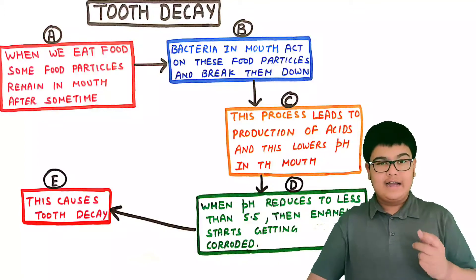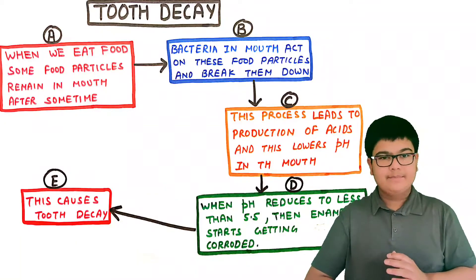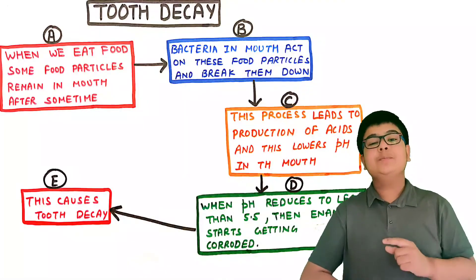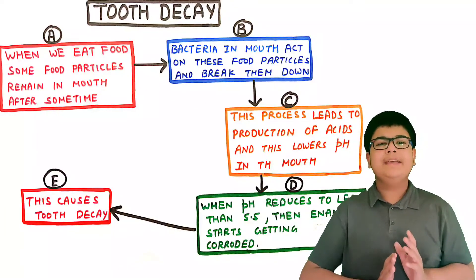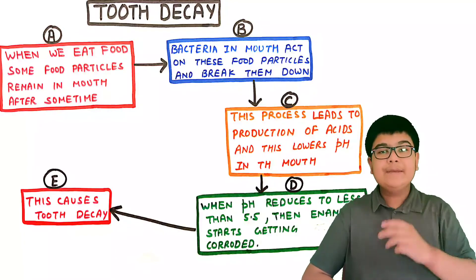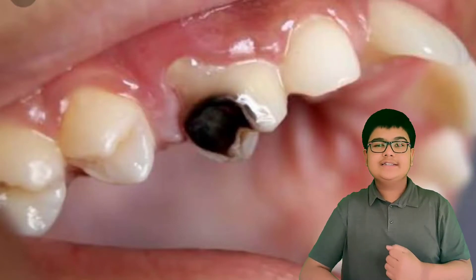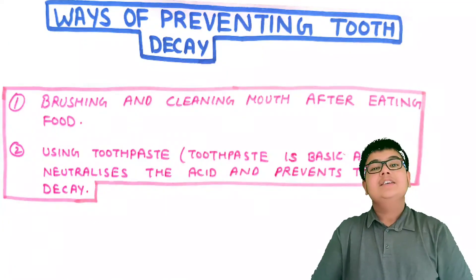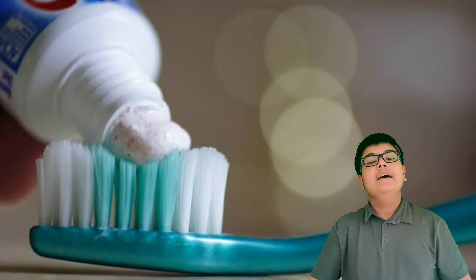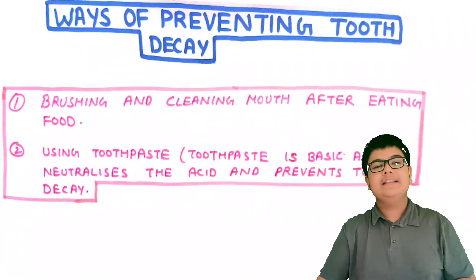Third, pH is the cause of tooth decay. When we eat food, some food particles remain in our mouth. The bacteria in the mouth act on these food particles and break them down, producing acids, which lowers the pH of the mouth. Normally the pH of the mouth is almost neutral, but when these acids are produced, the pH of the mouth becomes very low. When the pH reduces to less than 5.5, the enamel of the teeth starts getting corroded and this causes tooth decay. To prevent tooth decay: first, brush and clean your teeth regularly after eating. Second, use toothpaste — toothpaste is basic in nature and helps neutralize the acidic condition in the mouth, preventing tooth decay.